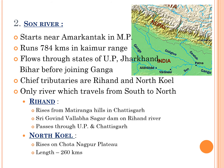The second major right tributary of Ganga river is Son river, which runs for 784 kilometers. It starts near Amarkantak in Madhya Pradesh state, just east of the Narmada river's headwaters, flows north-northwest through Madhya Pradesh before turning sharply eastwards at the Kaimur Range. Son river flows through Uttar Pradesh, Jharkhand, and Bihar before joining the Ganga just above Patna, running parallel to the Kaimur Range. The chief tributaries of Son river are Rihand and North Koyal.